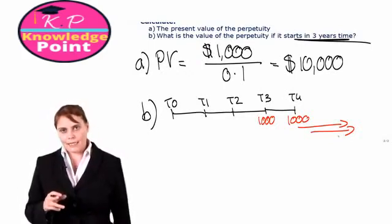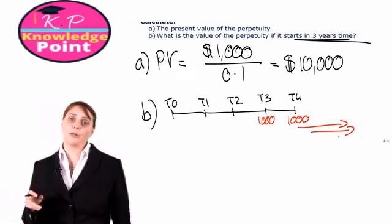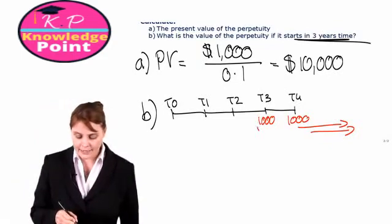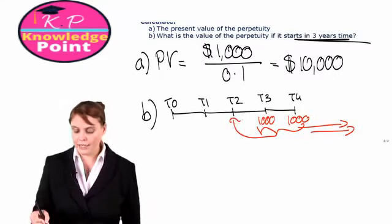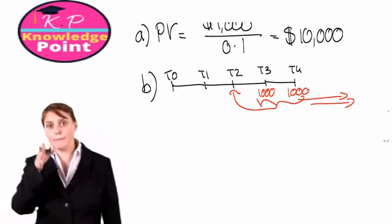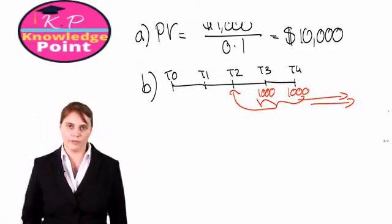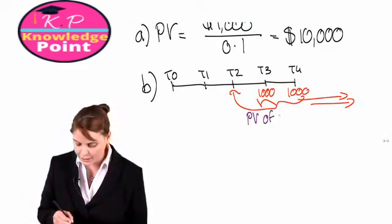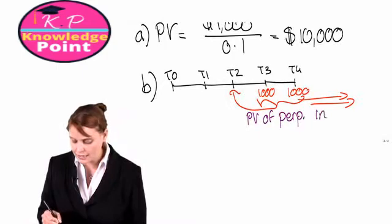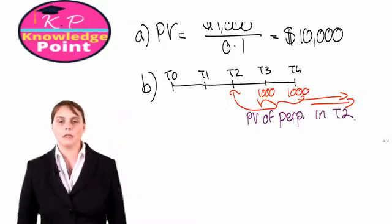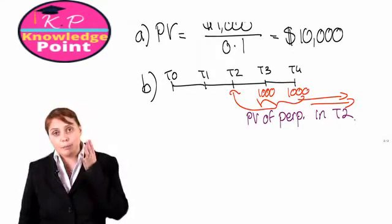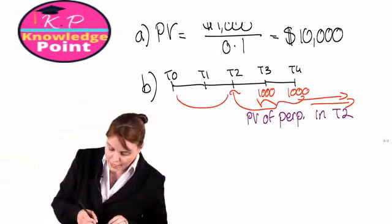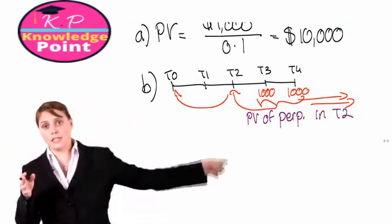If we calculate the present value of the perpetuity using our formula, we are calculating the present value in year two, the year immediately before we receive the first payment. Our first step will calculate the present value of the perpetuity in T2. But if we want to find the present value in T0, we are going to have to discount back from T2 to T0.